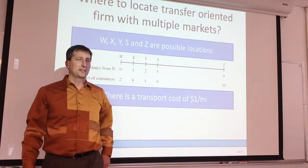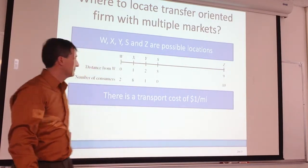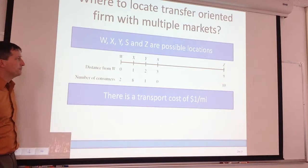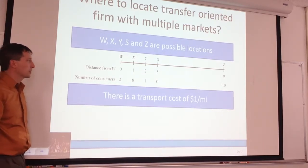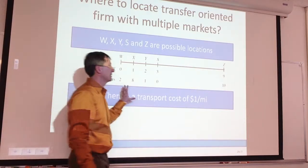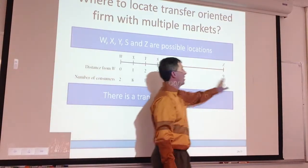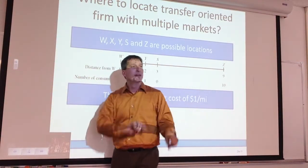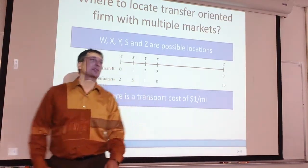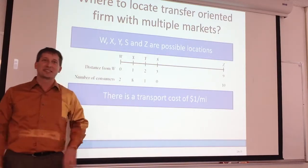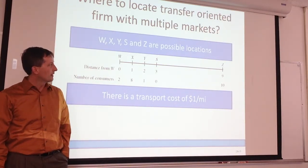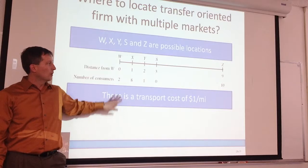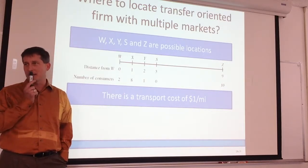Is that a dollar per mile per good or a dollar per mile per every trip? Per good. Yeah, you can't catch all 10 people here in one trip — we're making multiple trips. So one pizza at a time to somebody. Let's start putting some numbers to this.